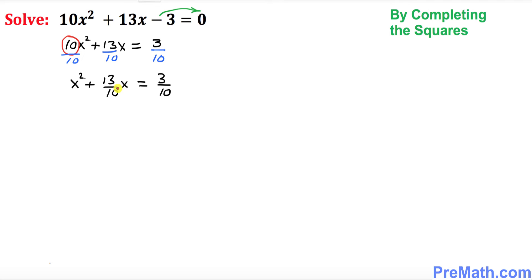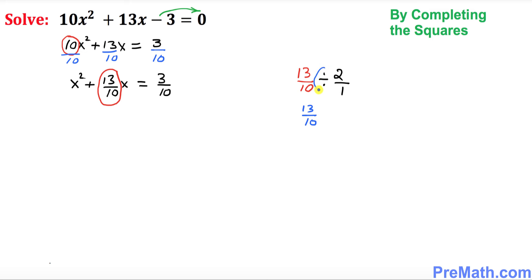Next, look at the coefficient of x — that's 13/10. Divide it by 2: dividing by 2 is the same as multiplying by 1/2, so 13/10 × 1/2 = 13/20. Now square that result: (13/20)² is what we will be adding to both sides.